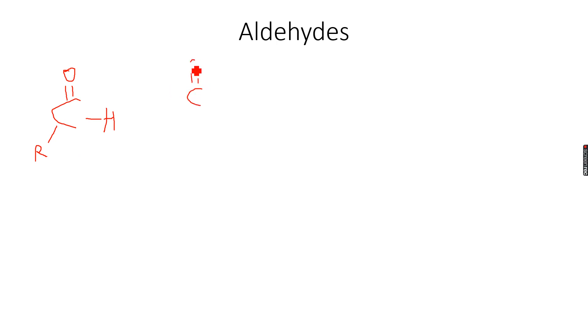This becomes CO, H and again H. You can see that this is the simplest aldehyde possible, four bonds, so carbon has completed its tetravalency.